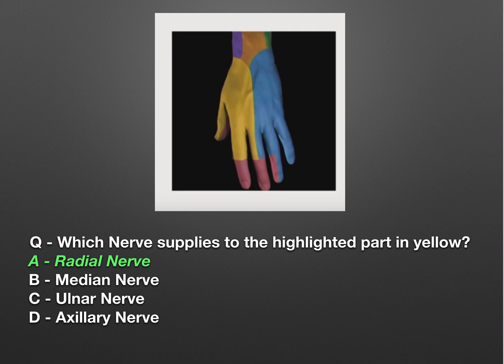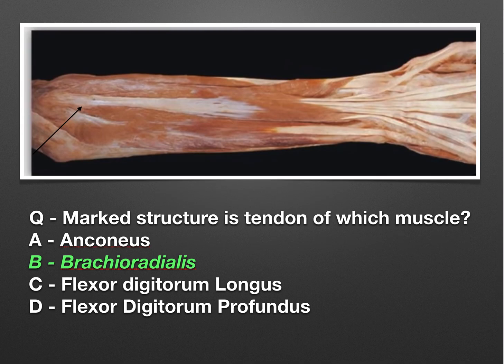The next question showed a dissected hand image with an arrow marking a structure. The question asked to identify the tendon of which muscle. The options were anconeus, brachioradialis, flexor digitorum longus, and flexor digitorum profundus. The answer was the brachioradialis tendon.